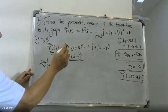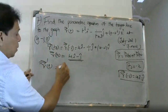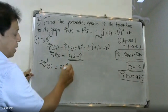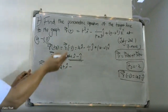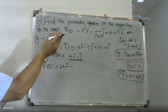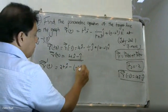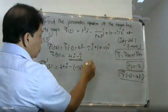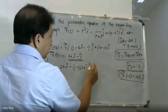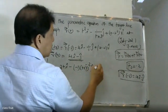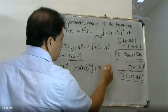Now I have to differentiate r(t). Differentiating the i component: 2t. Differentiating the j component: using the quotient rule, the numerator of (t plus 3) raised to minus one, that is minus one times (t plus 3) raised to minus two. Then for the k component, differentiating 4 minus t² gives minus 2t.